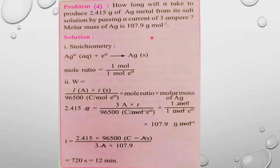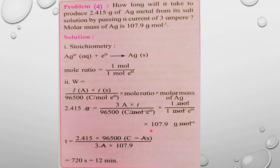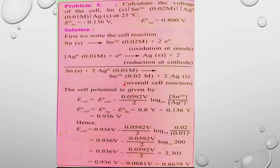Since 720 seconds divided by 60 equals 12 minutes, it will take 12 minutes passing a current of 3 amperes to produce 2.415 grams of silver. The formula used was W = (I × t) / 96,500 × mole ratio × molar mass. That completes example four. Next is problem number five.